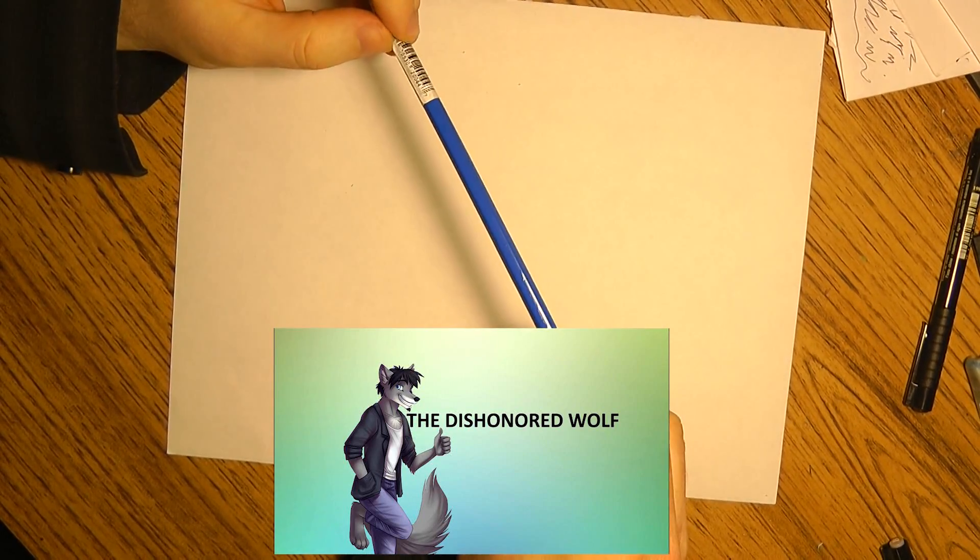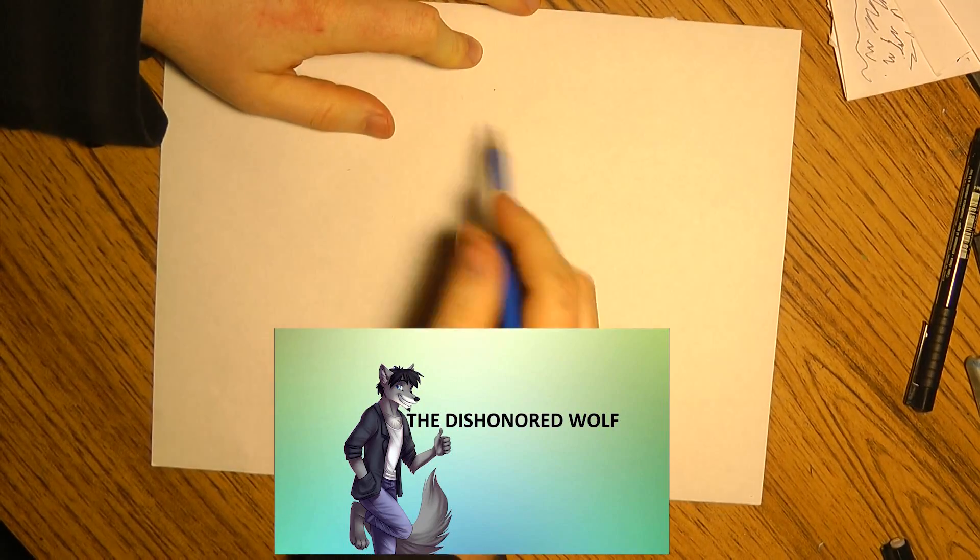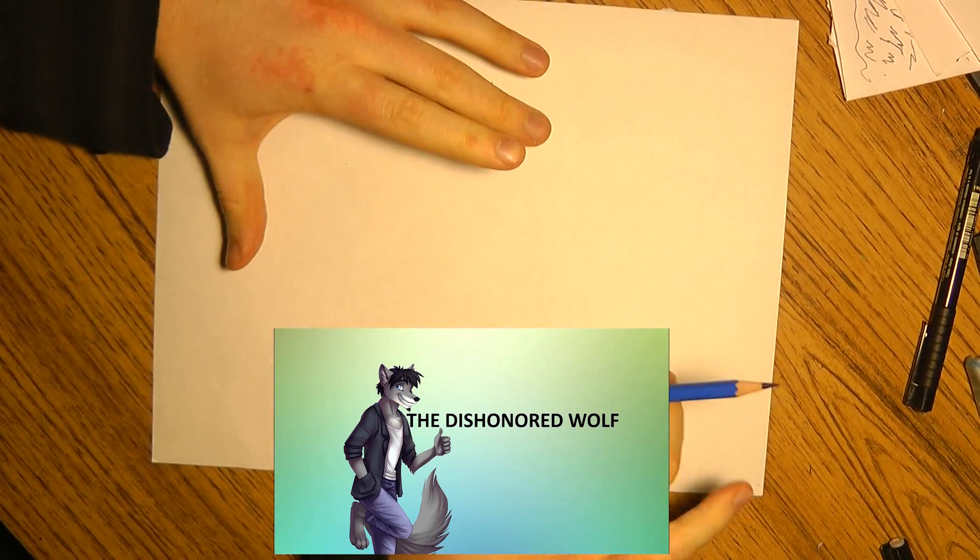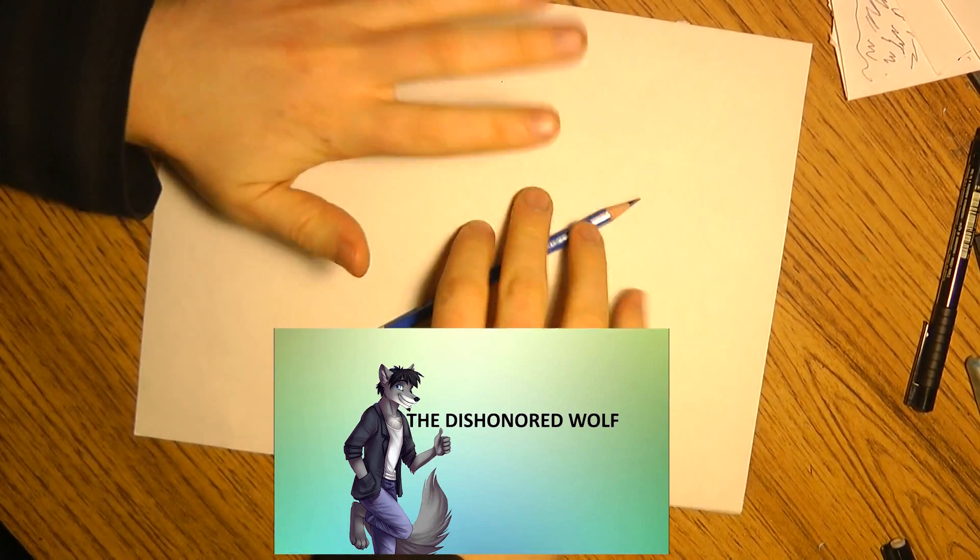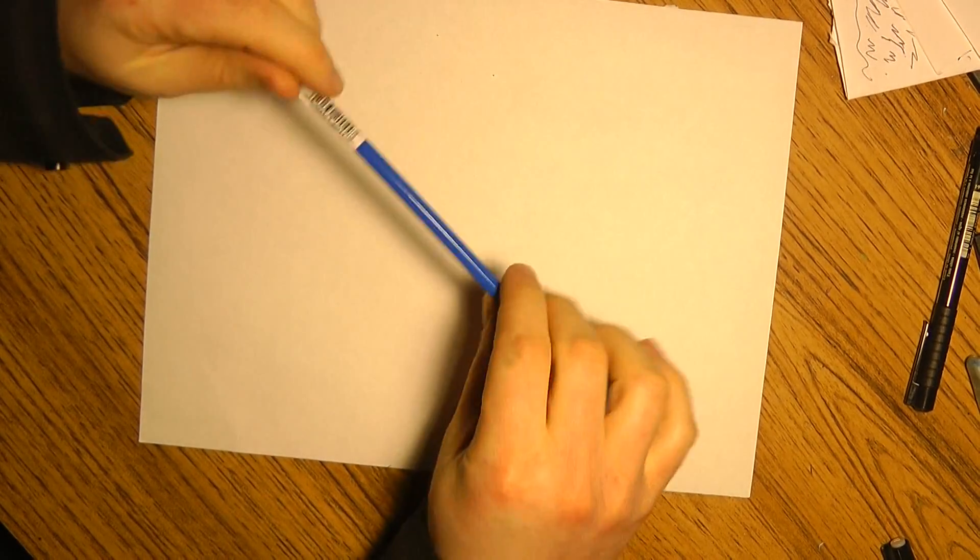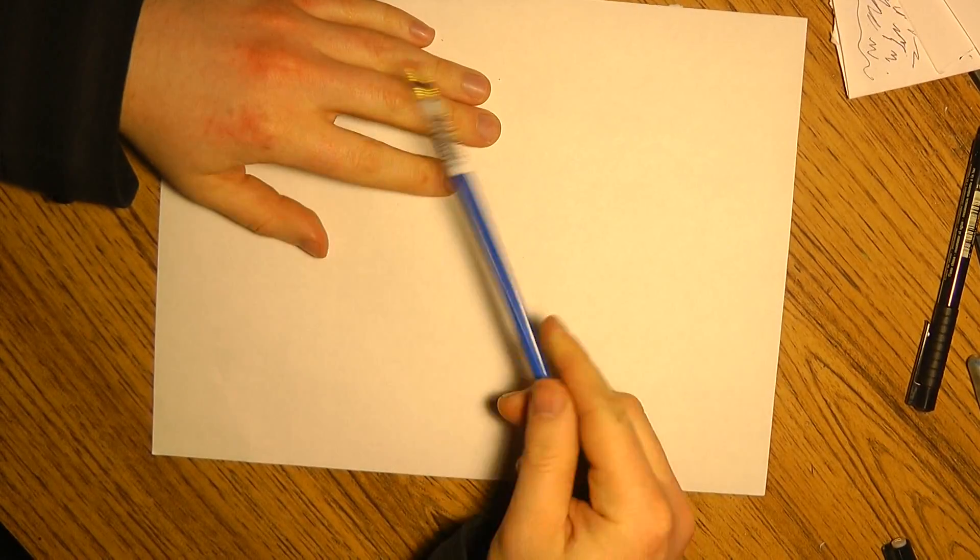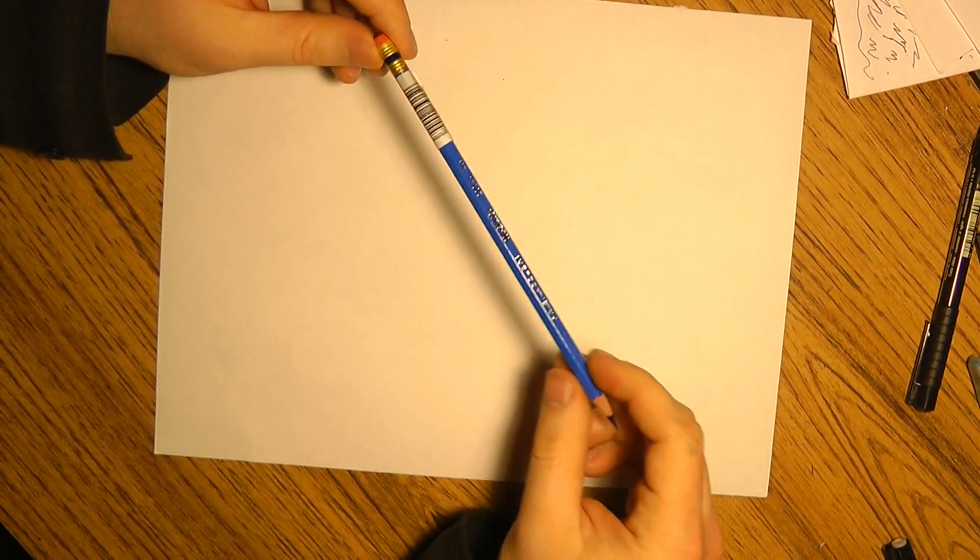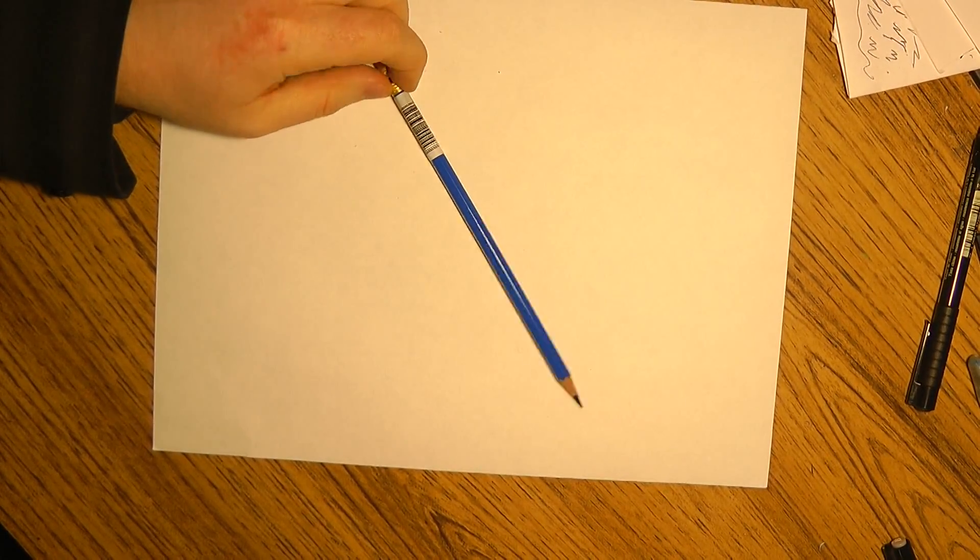He does primarily gaming stuff and rants, and his shtick is he has this wolf character which he animates. It's not like Don Bluth kind of full animation, you know, it shifts position around. You see a lot of YouTubers do that, kind of the same vein as The Armored Skeptic. There's this other guy who does it, but I'm not real sure.